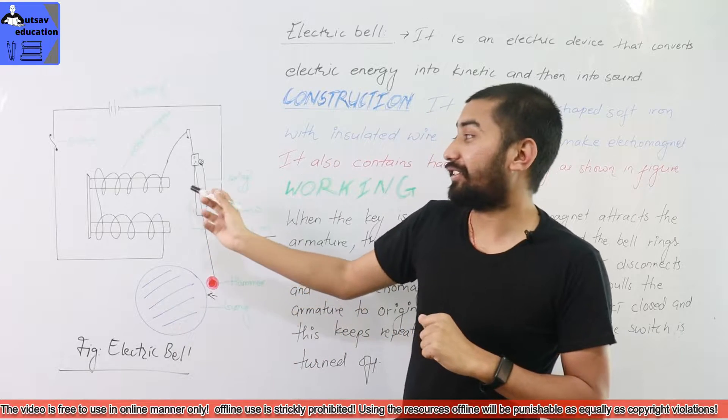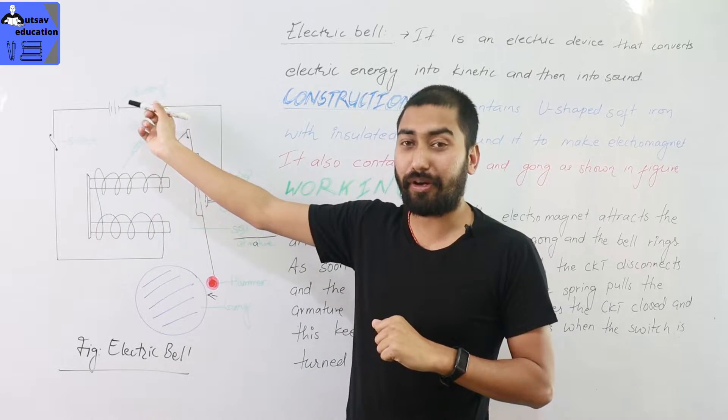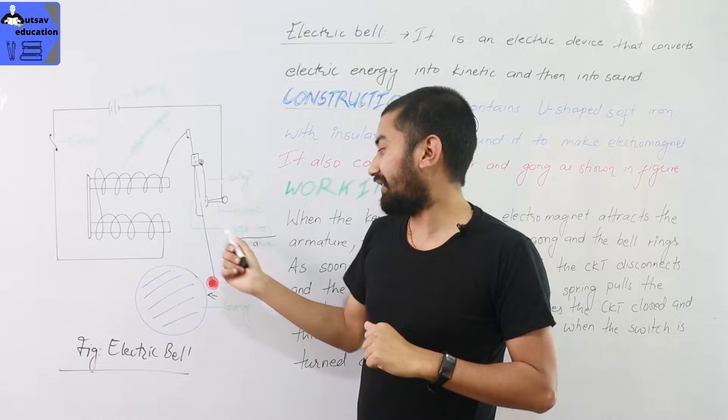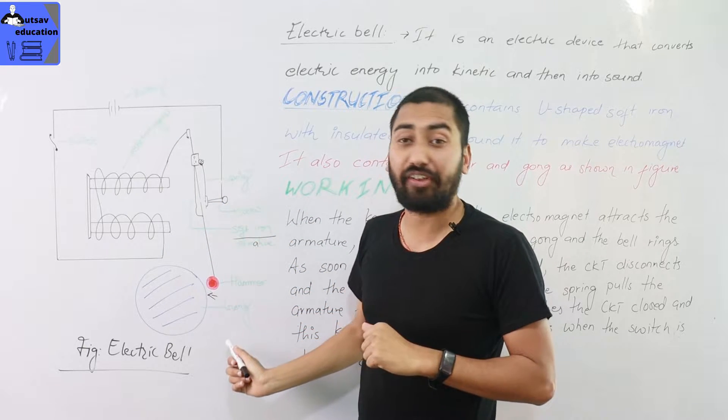It consists of a U-shaped electromagnet, a switch, a battery power source, a spring, a hammer and a gong as shown in the figure.